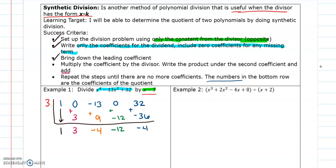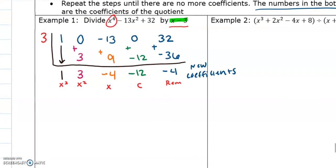Like it said right here, the numbers in the bottom row are the coefficients of your quotient. So these are my new coefficients. And so I know that this is going to be x to the third term. This is the x squared term. This is my x term. This is my constant. And then this is your remainder if you have one. And we started with x to the fourth. So I know I'm going to go down a degree to start with x to the third.